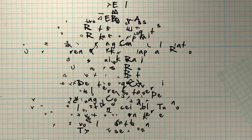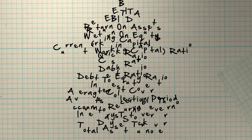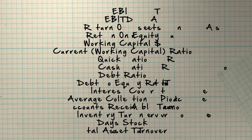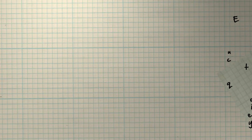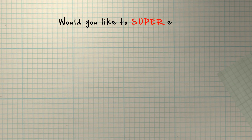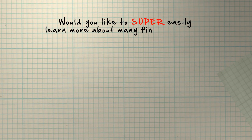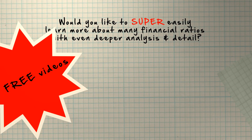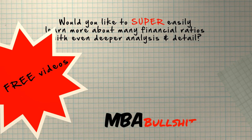Note that this was just a very simple overview. There are a lot more financial ratios and many different ways of using them, plus a lot of problems and disadvantages in using them as well. Would you like to super easily learn more about many financial ratios with even deeper analysis and detail? Check out my free videos at MBAbullshit.com. See you there!